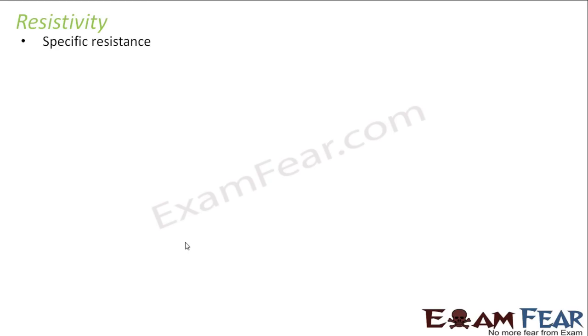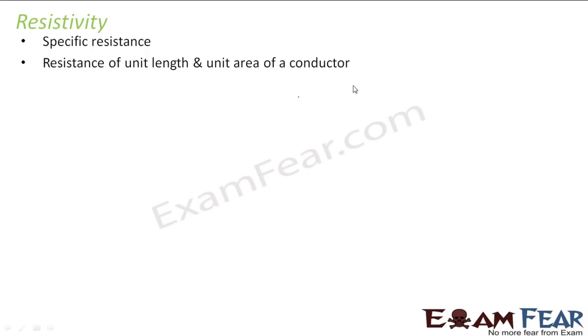When we derived the expression for resistance, we got something called rho, which we called resistivity or specific resistance. Now we will discuss resistivity. Resistivity is often known as specific resistance because it is the resistance of a specific material — it is very specific to a particular material. To define resistivity, we will again take help of the expression for resistance.